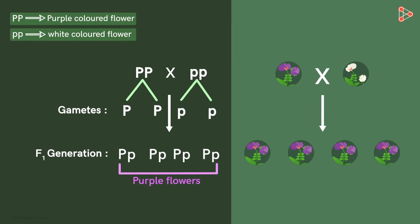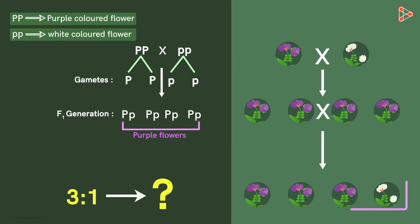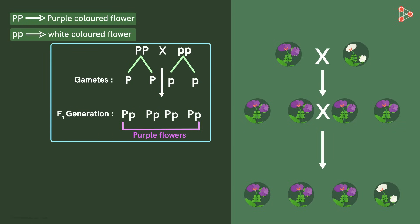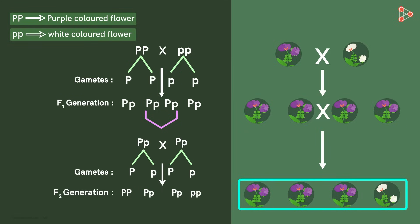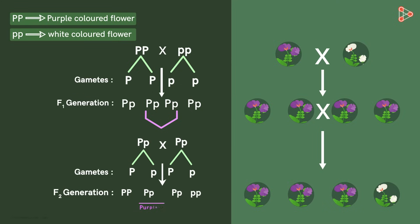Can you guess why the ratio 3 to 1 is obtained in the F2 generation? Let's find that out with a similar theoretical cross. We take any two random plants from the F1 generation. Crossing these two — or by carrying out the selfing process — gives us a result where three offsprings have at least one dominant gene, making each of these a purple-flowered plant. In the last case, both the genes are recessive, meaning no gene to dominate the trait, so the plant expresses the recessive trait — white coloured flowers.